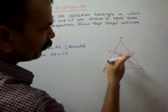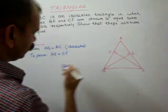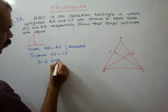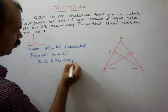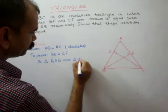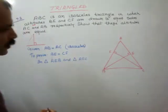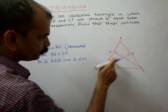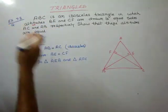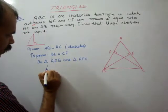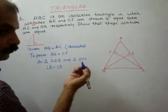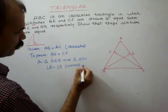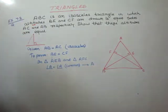So which triangles will we take? We will take triangle AEB and triangle AFC. In these two triangles, first, angle A is common — so angle A is equal to angle A. This is common to both triangles.